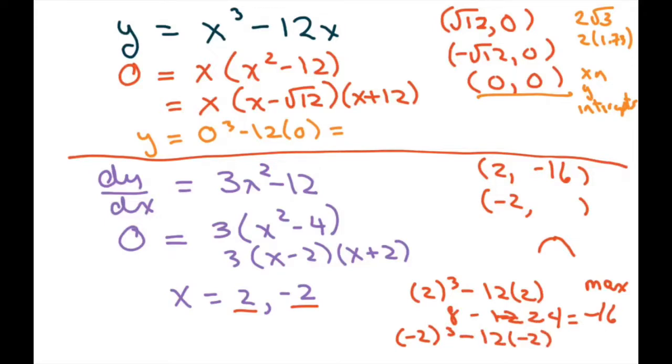And that's going to equal positive 16. So that's going to be a minimum because it's positive. That means it's turning positive. So if you have a graph like this, it's turning positive right here. All right.